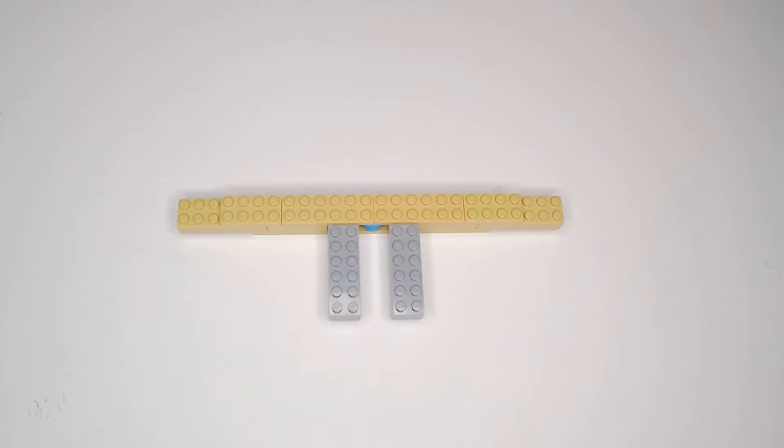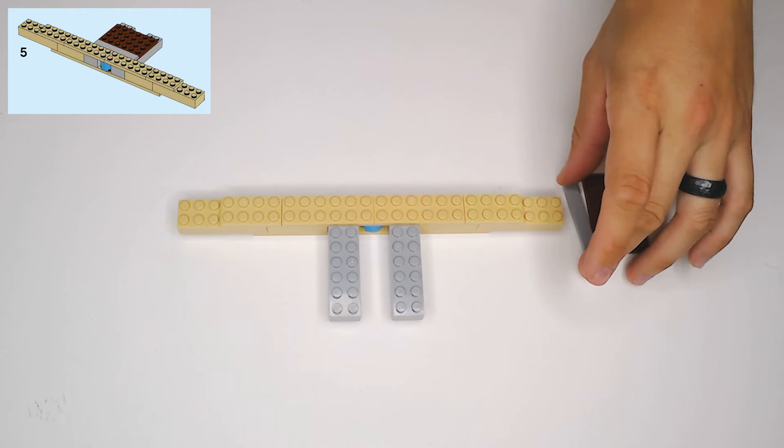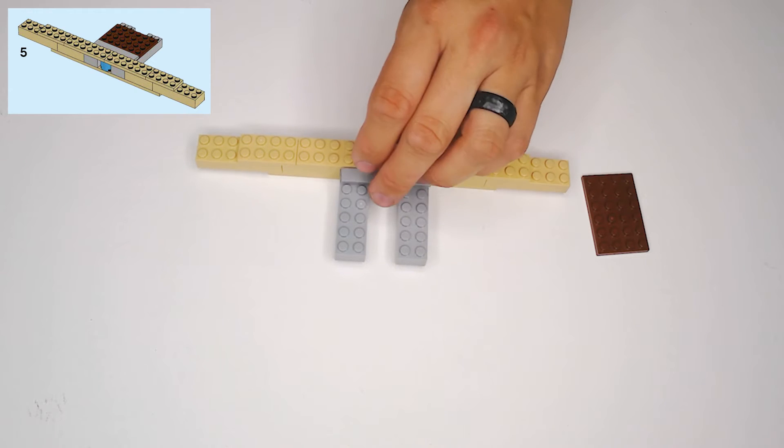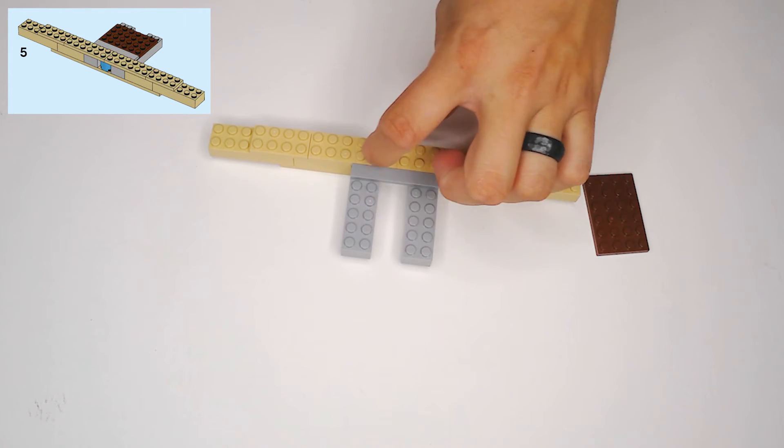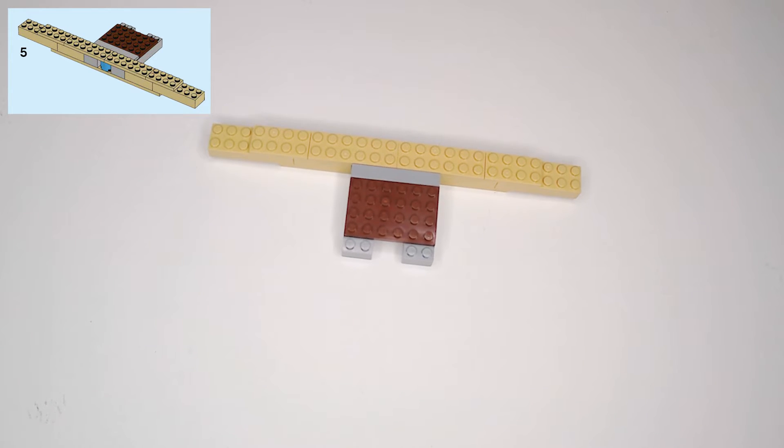In step five, we need a 1x6 tile in light gray, and we need a brown 4x6 plate. The tile is going to go in first. It's going to go spanning across between those two light gray blocks, right up against the edge of those tan plates, and then right underneath that is going to go this brown plate.